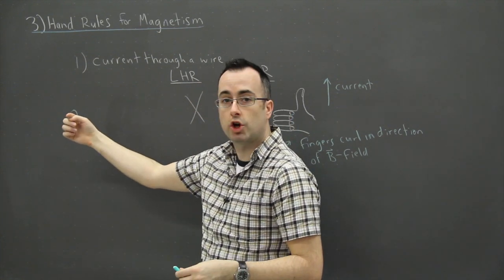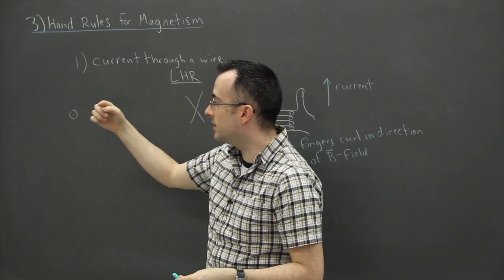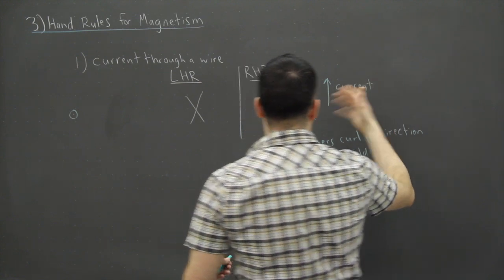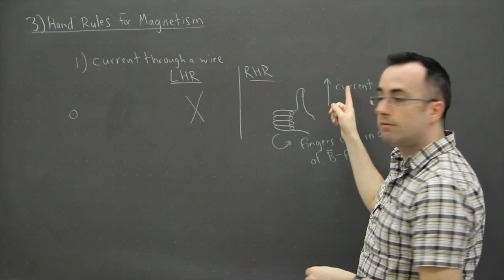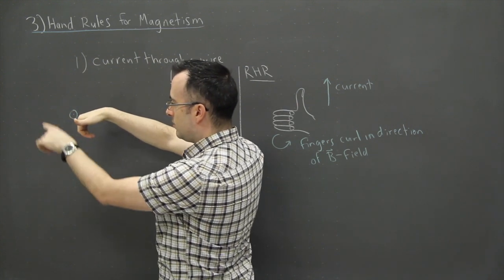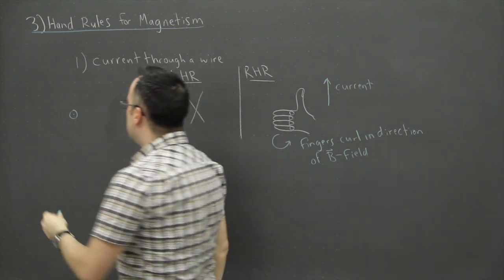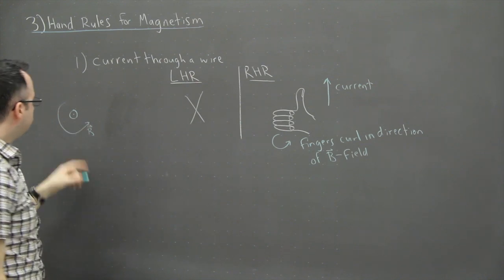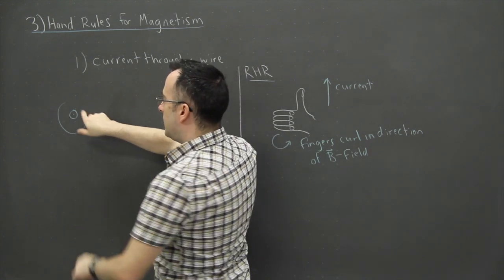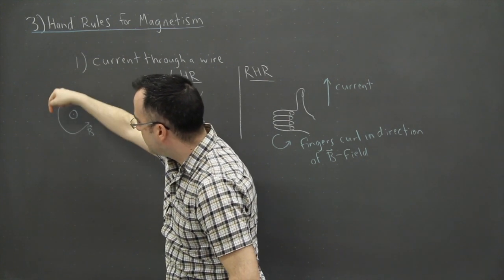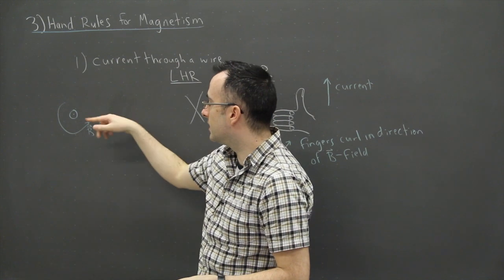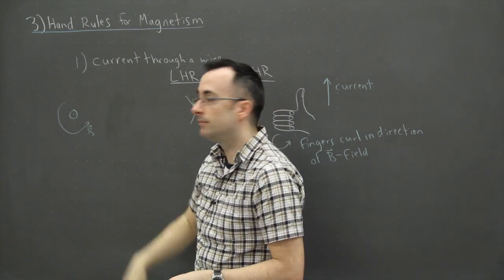If the current is going out of the page, I use my right hand rule — my thumb points out of the page in the direction of the current, and my fingers curl counterclockwise. That means the magnetic field lines go counterclockwise around the wire. If I place a magnetic compass at various positions around it, the north of the compass would point in the direction of those field lines. That's hand rule number one.